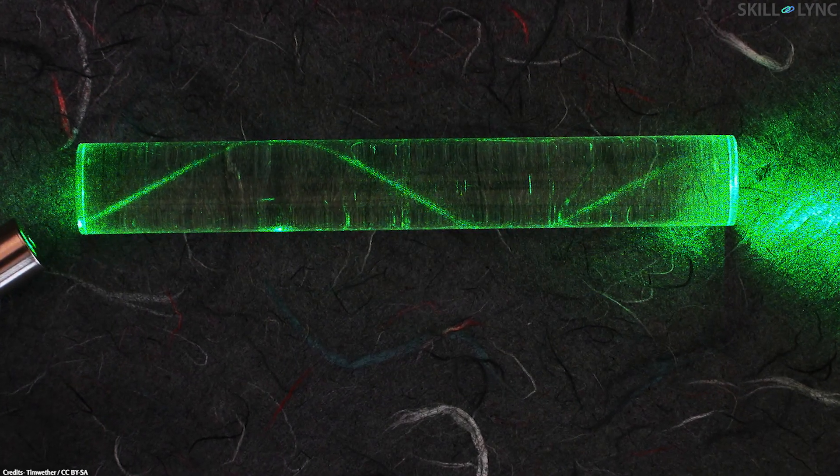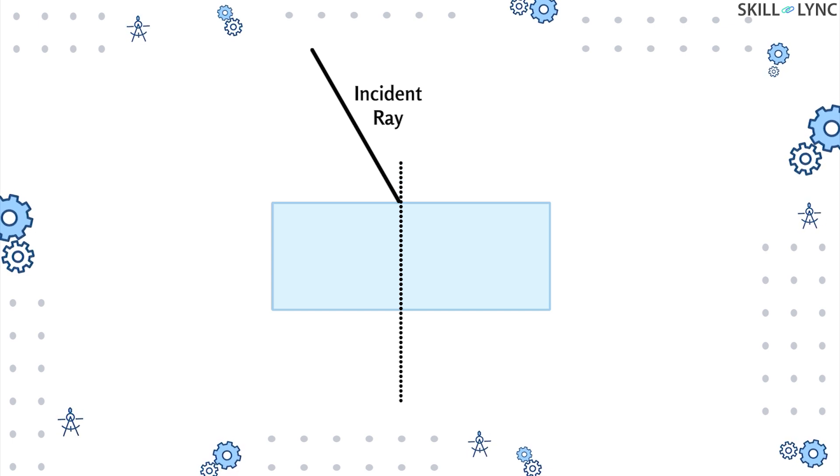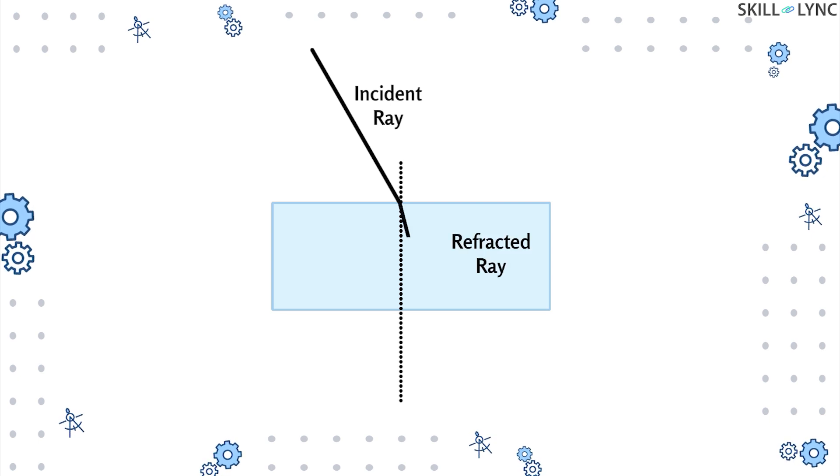Let's understand how information is sent through this cable. To do this, we will observe a ray of light that enters from one medium to another. At the point where the ray strikes the surface, an imaginary perpendicular line is drawn at it. This line is called the normal.